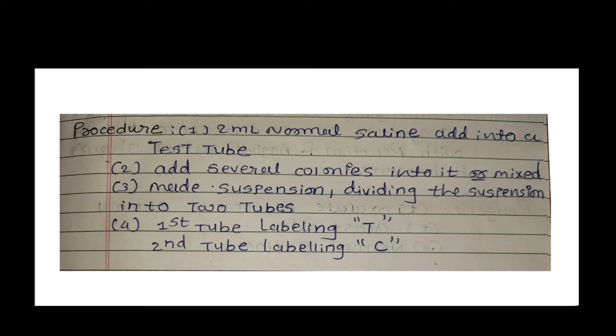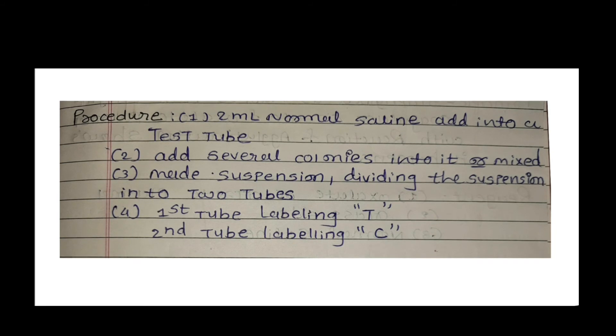Procedure: 2 ml normal saline test tube में लेते हैं, उसमें several colonies add करके mix करते हैं। बने हुए suspension को 2 tubes में divide करते हैं — पहली tube labeling T (test) और दूसरी tube labeling C (control)।